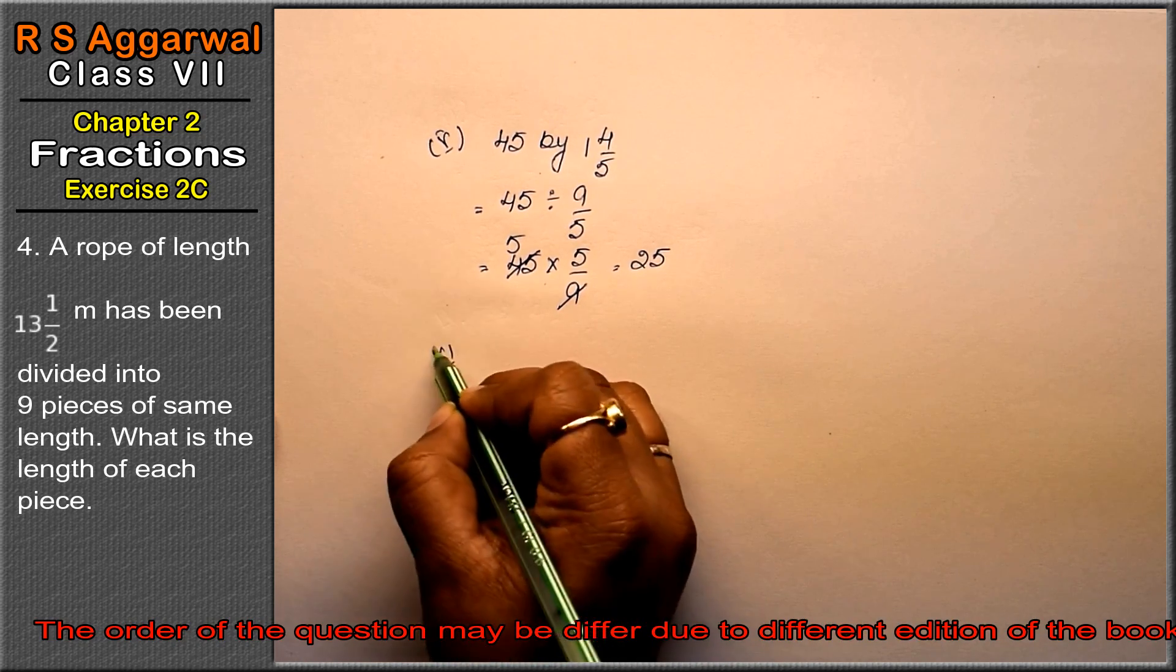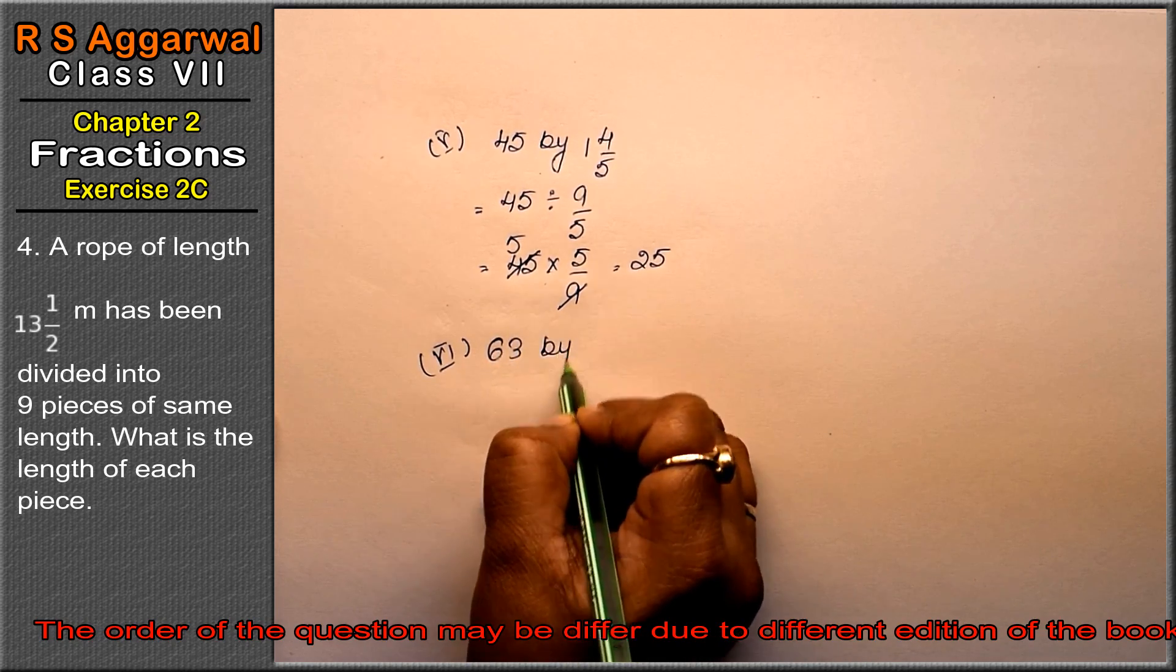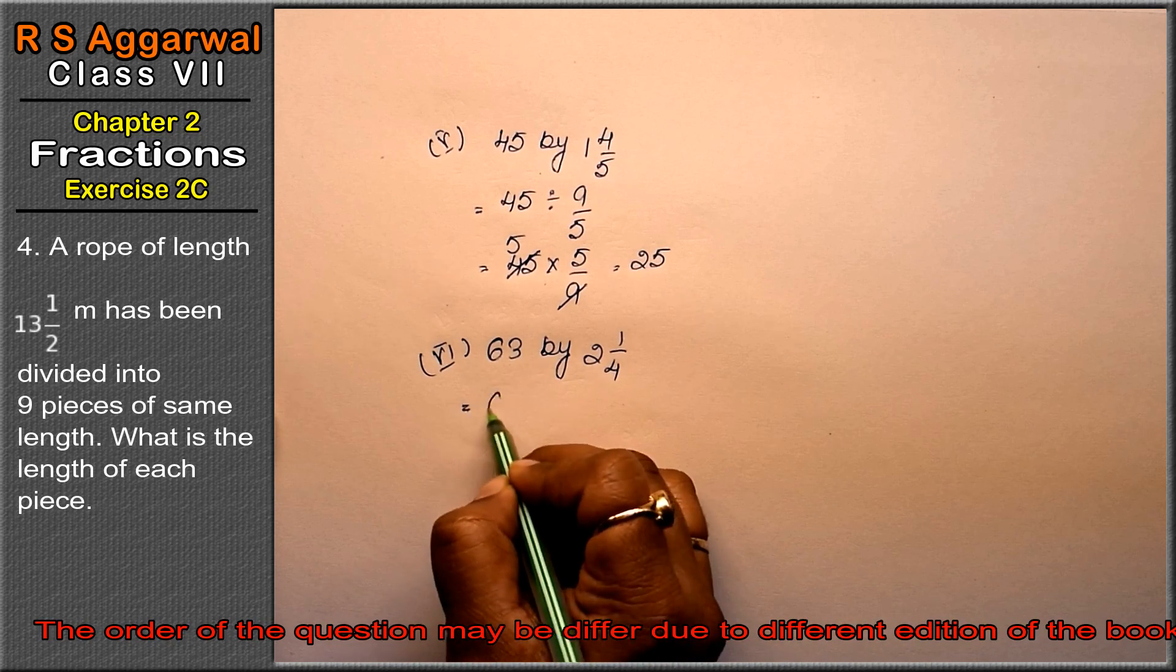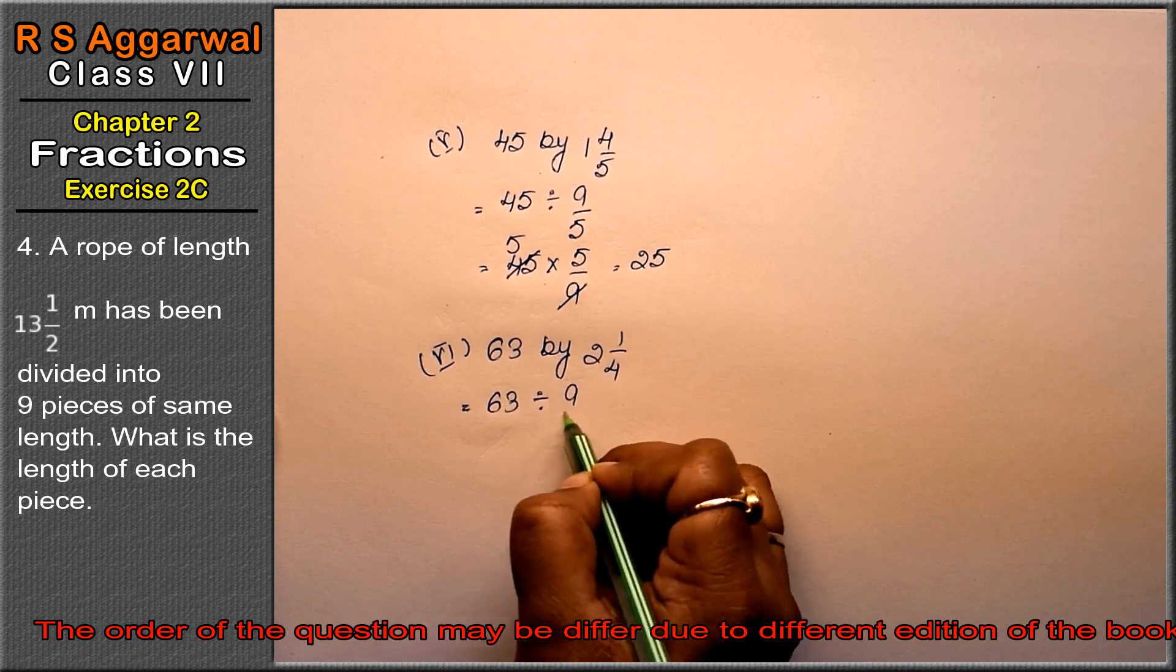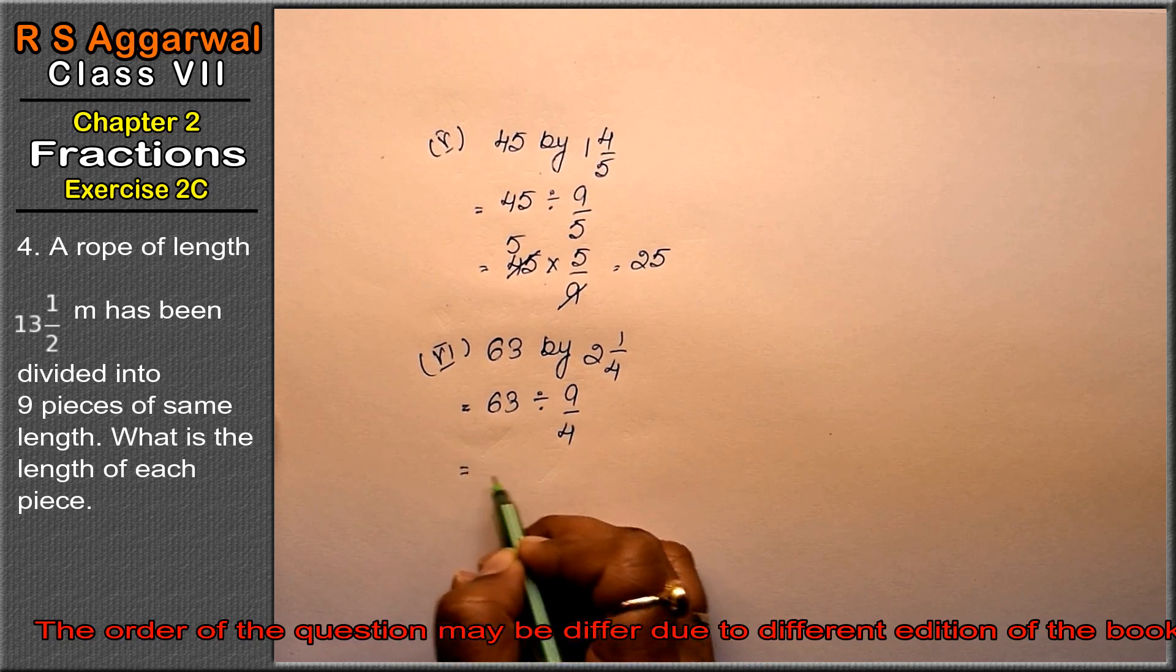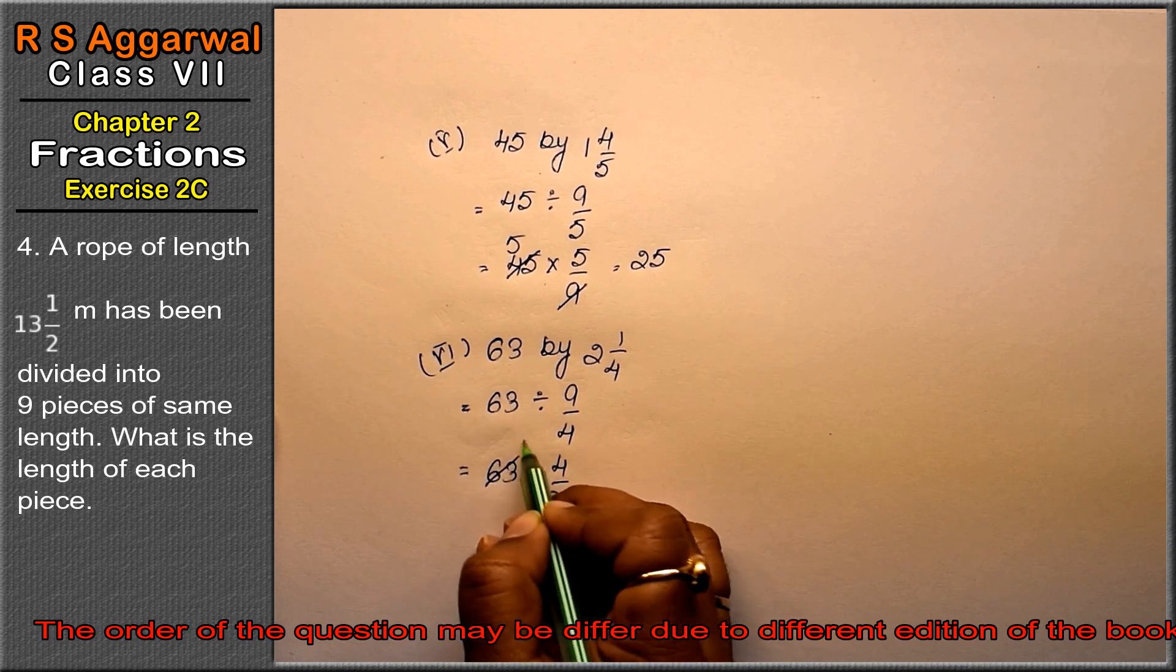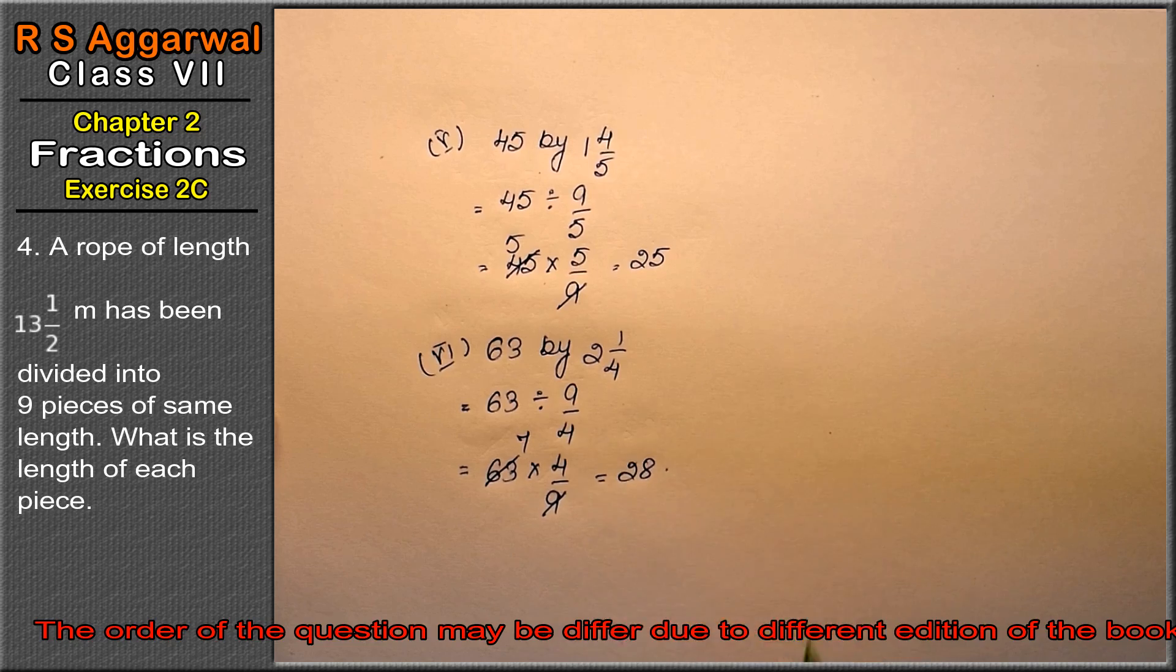Let's do the last part. Last part is divide 63 by 2 whole 1/4. 4 times 2 is 8 plus 1 is 9/4. So 63 multiplied by 4/9. 9 times 7 is 63. So 7 times 4 is 28, that's the answer.